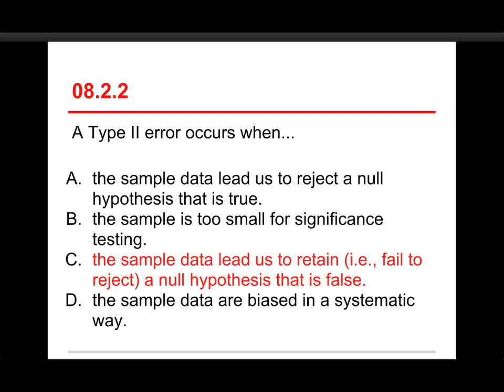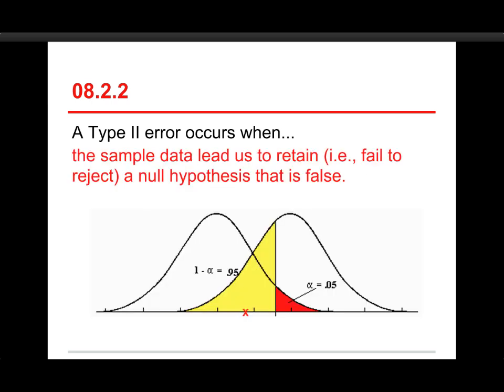What that is, is a false negative, meaning there really is something going on, and we should have rejected it, but our sample data didn't lead us to that conclusion. Here's the same picture, except this time we got this little red X, and it's in the center of things. The idea here is that that X could very easily come from the alternative hypothesis on the right.